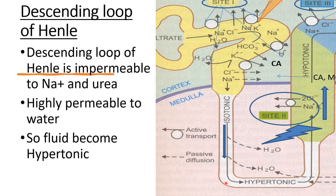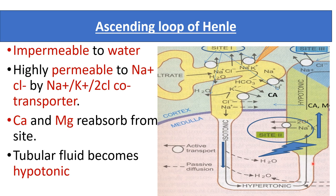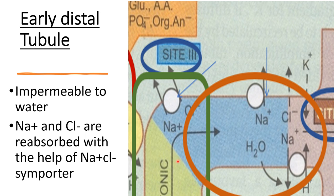In the ascending loop of Henle, the tubule is impermeable to water but highly permeable to sodium and chloride. Sodium and chloride are reabsorbed through the sodium-potassium-2-chloride co-transporter pump. Calcium and magnesium are also reabsorbed from this site. Since water is impermeable here, the tubular fluid remains hypotonic. In the early distal convoluted tubule, water is also impermeable but sodium and chloride are reabsorbed via the sodium-chloride symporter, so the fluid remains hypotonic at this site.